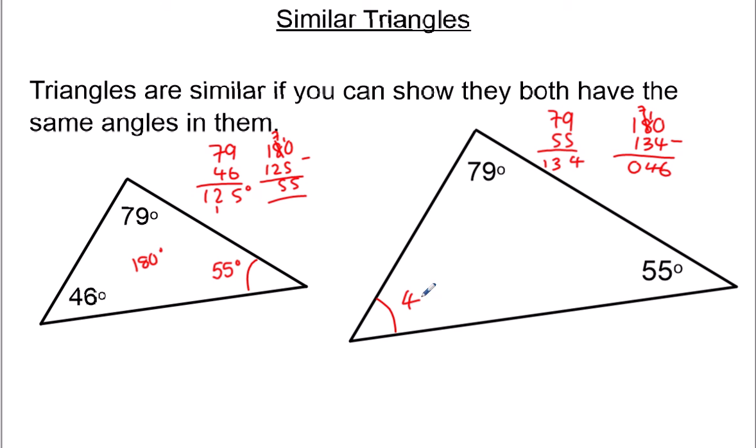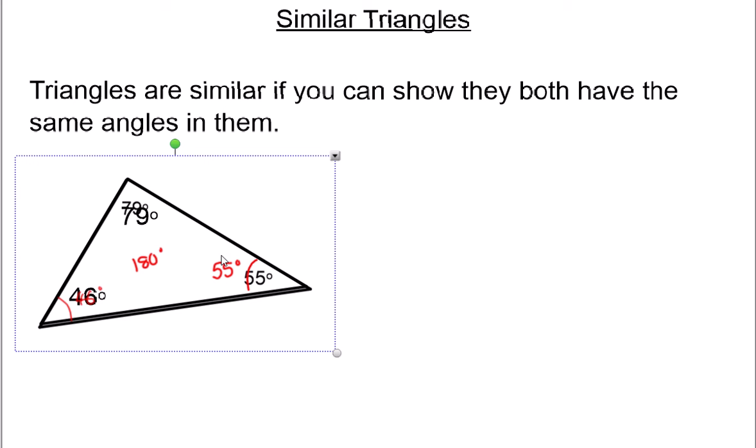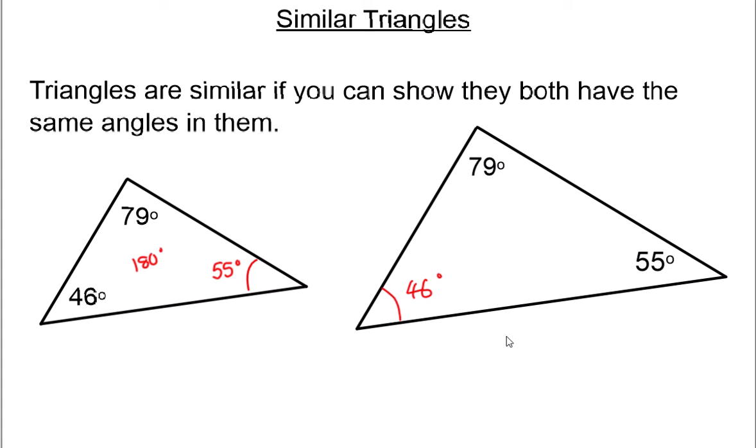Therefore these triangles are similar. And I can show you — if I draw a loop around this one and shrink it down, I can prove they are exactly the same. The only thing different between these two triangles was the size; other than that, they're identical — they've got the same three angles. That's one way you can prove shapes are similar, by working out angles and showing they're all the same.